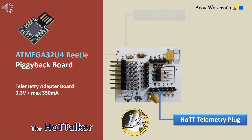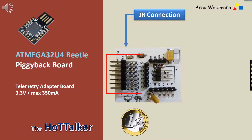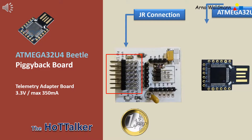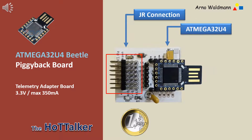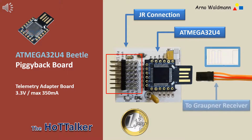The Hot Talker is a do-it-yourself telemetry data controller interfacing with Graupner Hot receivers. The structure of this module is also very simple. It is a piggy board consisting of an interface board with power supply and an ATmega32U4 Beetle.